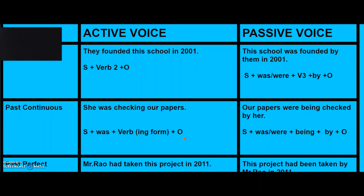Now we will focus on its conversion: 'Our papers were being checked by her.' When converting sentences of present continuous or past continuous, you have to write 'being' immediately after the helping verb in all passive sentences.